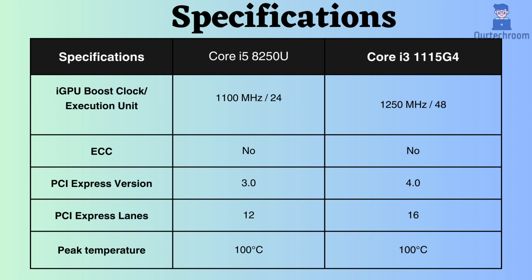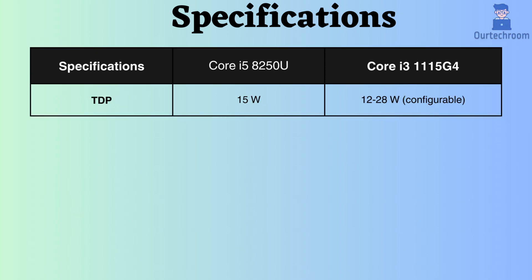Both processors can withstand temperatures up to 100 degrees Celsius. The TDP of the Core i5 is not configurable and has a fixed value of 15 watts, whereas that of the Core i3-1115G4 is configurable and ranges from 12 to 28 watts. So, based on power consumption alone, the Core i3 can perform better due to its configurable and lower TDP value.